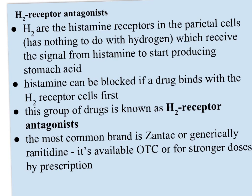H2 is an abbreviation for the histamine receptors — it has nothing to do with hydrogen. Here H2 has a totally different meaning: it's the histamine receptors in the parietal cells which receive the signal from histamine to start producing stomach acid. The histamine can be blocked if a drug binds with the H2 receptor cells first, so this group of drugs is known as H2 receptor antagonists — antagonists meaning they interfere with histamine's binding. The most common H2 receptor antagonist is the brand name Zantac, or generically ranitidine. It's available over-the-counter, or in stronger doses by prescription, and has been on the market quite a while, considered quite a safe drug, used by many people with ongoing dyspepsia.